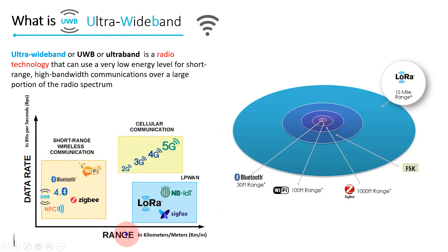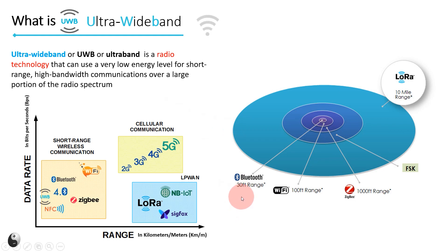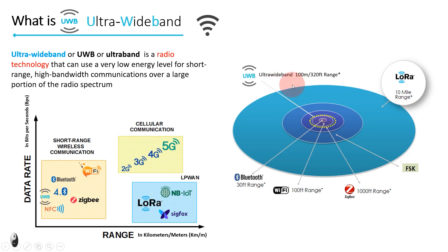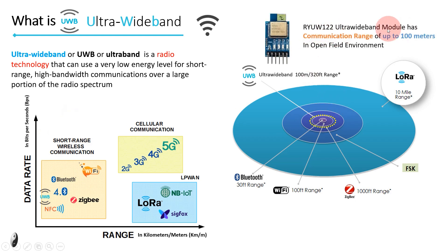Then range means how far you can transmit the signal using these wireless technologies. In this image, you can see typical communication ranges for Bluetooth, Wi-Fi, ZigBee, LoRa, and other wireless technologies. Similarly, ultra-wideband can have a communication range up to 50 to 100 meters, that is up to 300 feet. UWB comes in the same category as Bluetooth and Wi-Fi — short-range wireless communication. The UWB transceiver module which we are going to review has a communication range up to 100 meters in an open field environment.